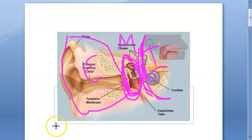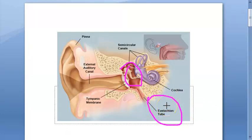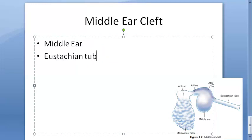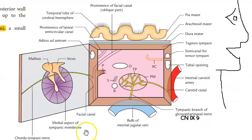The middle ear together with the eustachian tube, aditus, antrum, and mastoid air cells is called the middle ear cleft. So not just the middle ear alone — if you include the eustachian tube, antrum, aditus, and mastoid air cells, these five things together become the middle ear cleft. Just understand this clearly.